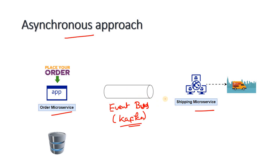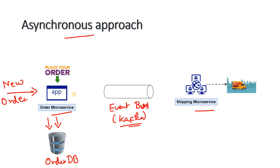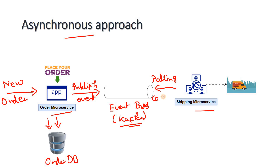Popular event buses like Kafka or SQS can be used in the middle. In this architecture, a new order comes in, the Order Microservice writes it to an Order DB and publishes the event to Kafka or an event bus. The Shipping Microservice acts as a polling consumer, continuously pulling from the Kafka topic at a certain interval, consuming messages in FIFO order, and preparing shipments accordingly.